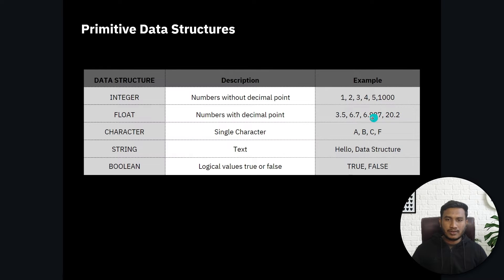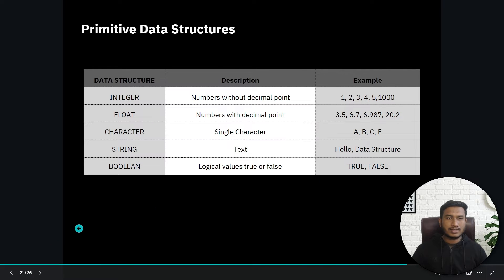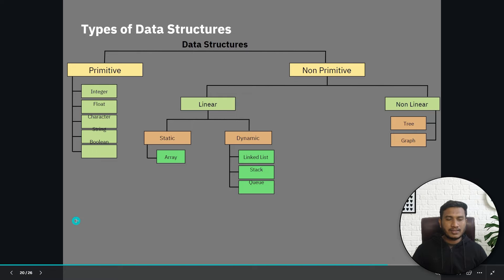Character is nothing but a single character — a, b, c, e, f, g and so on. String is nothing but text — if you are writing any kind of text, that can be considered a string. Boolean is a logical value — it provides a true or false statement. In Python, we write true and false in uppercase characters. This is primitive data structure in detail and it is very simple — it cannot be broken down into sub-types.